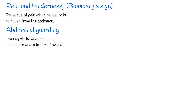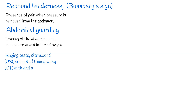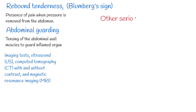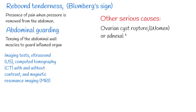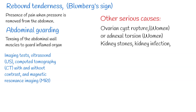Although many patients can have atypical presentation, appendicitis can present partially or without classic abdominal symptoms. Imaging tests such as ultrasound (US), computed tomography (CT) with and without contrast, and magnetic resonance imaging (MRI) are also used extensively for the diagnosis of appendicitis.